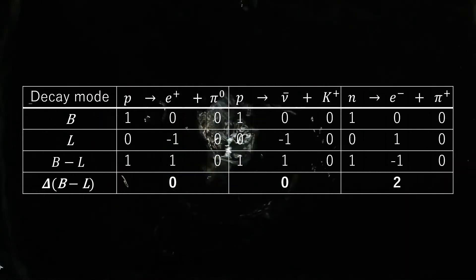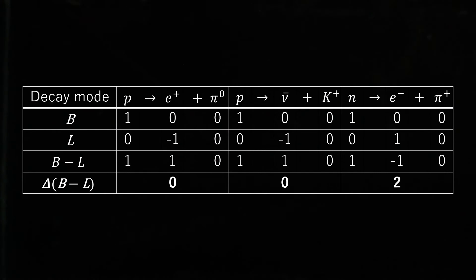They may be predicted in SO(10) GUTs with an intermediate scale at which baryogenesis is realized.